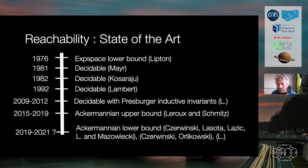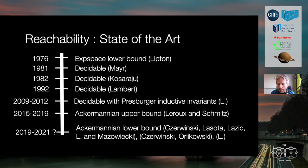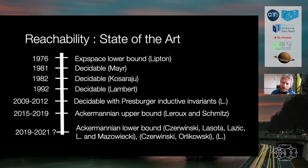Concerning complexity: with Schmitz we proved in 2015 that the KLM algorithm has cubic Ackermannian complexity. A few years later we simplified the algorithm, found a new ranking function for its termination, and proved the reachability problem is at most Ackermannian — a non-primitive-recursive complexity upper bound.